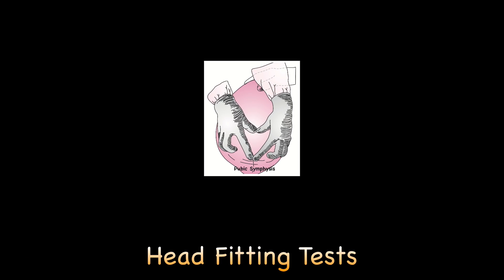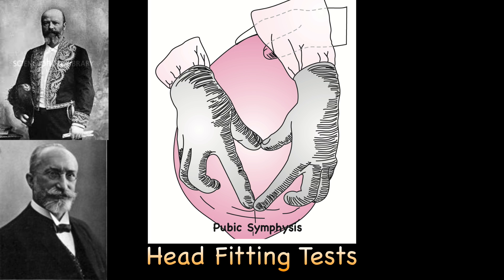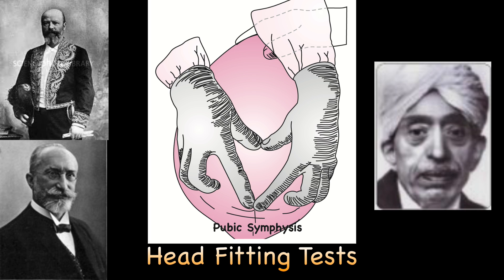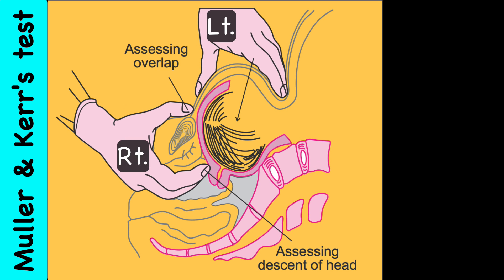Towards the end of the 19th century, Pinard, a French obstetrician, first introduced a method of abdominal palpation to estimate the relative size of the fetal head and the maternal pelvis. His method was later further improved by other stalwarts like Leopold, Muller, Mandraker and Einepurandre. Head fitting tests are done to detect contracted inlet if the head is not engaged in the last two to four weeks in a primigravida. Of the more than 100 tests described, the best method is Muller and Kerr's test.